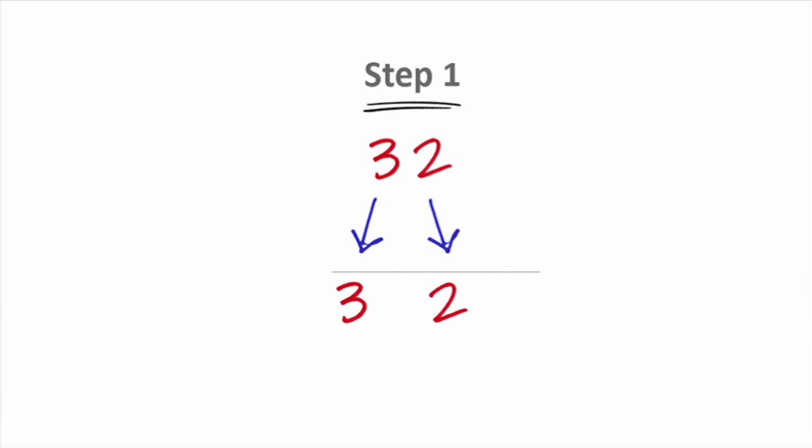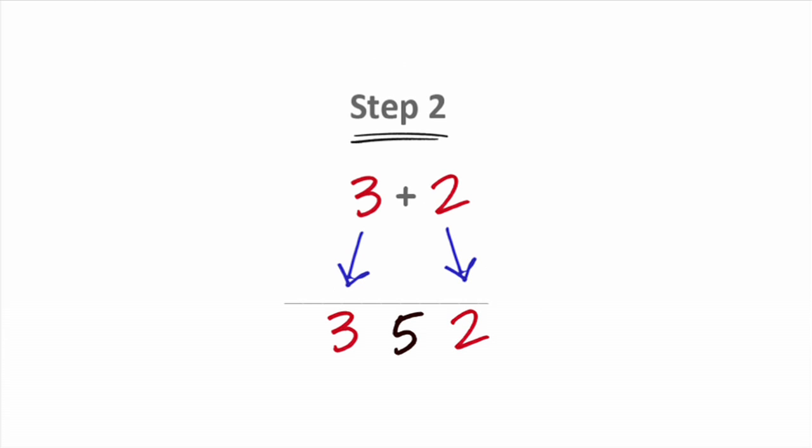What we do is step one. We separate 3 and 2. That gives us something like this and we simply add 3 and 2. So the answer becomes 352. It's as simple as that. Why don't you try?